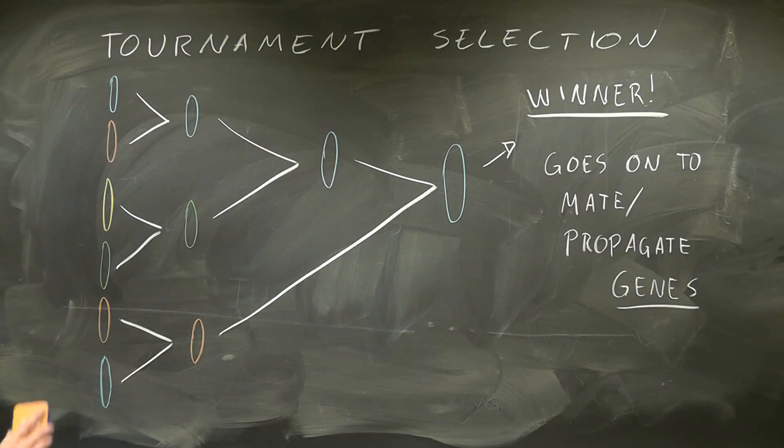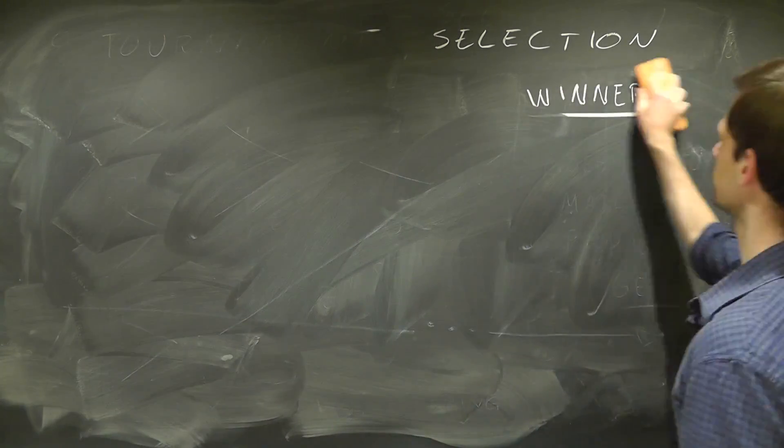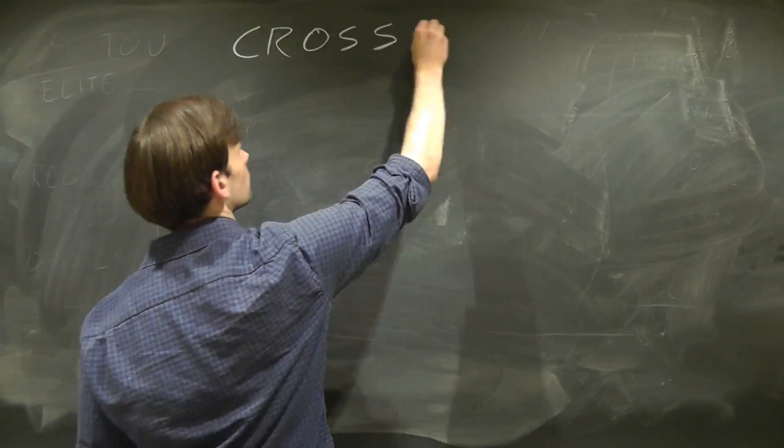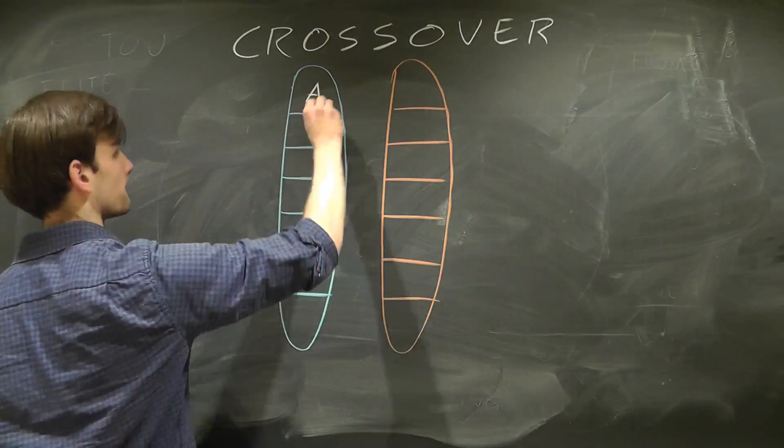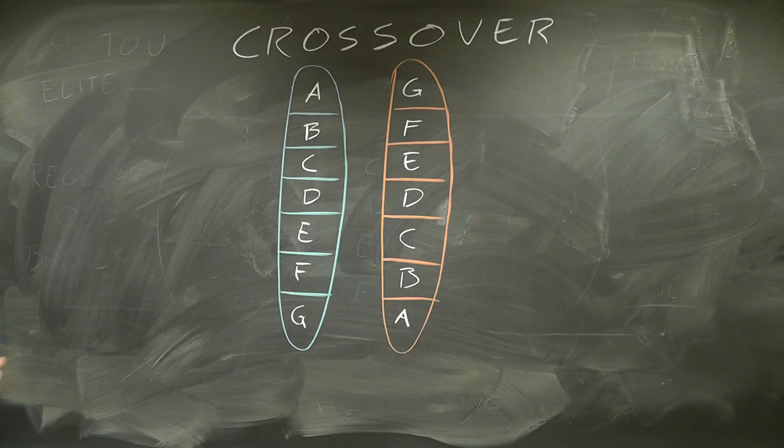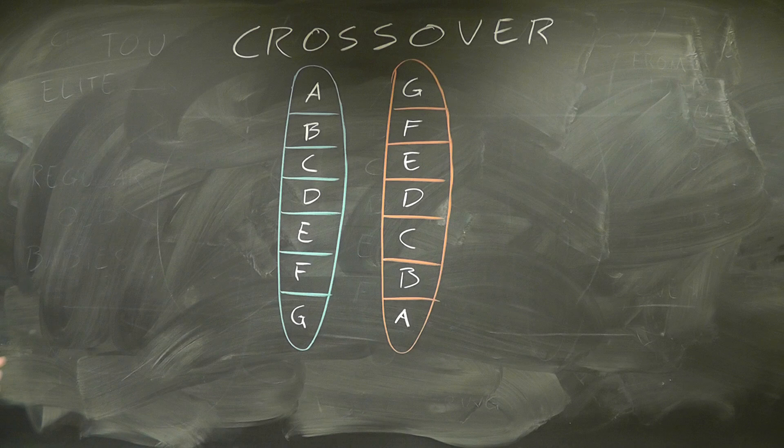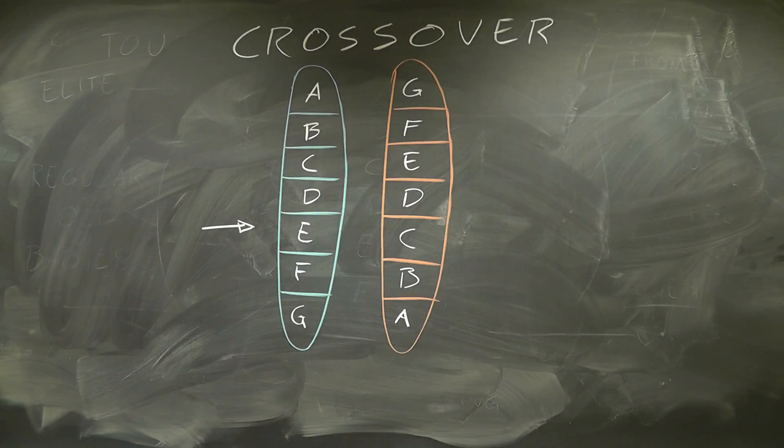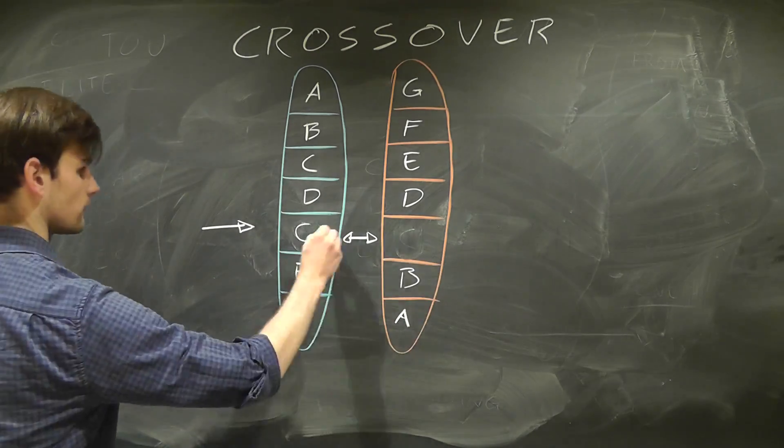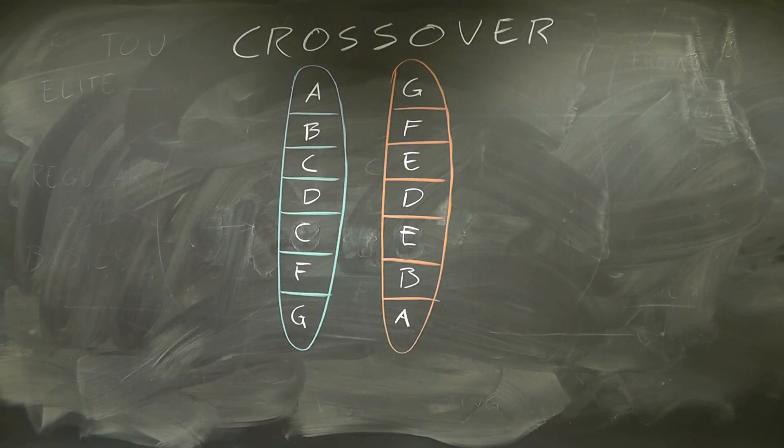After selecting the parents, we need to add some sort of genetic variability by performing a crossover step, which is greatly dependent on the system we're working with. For this case, we need to use some kind of ordered crossover operation, like the cycle operator. First, we pick a location on both chromosomes and swap the two parent genes, or cities in this case, at that location.